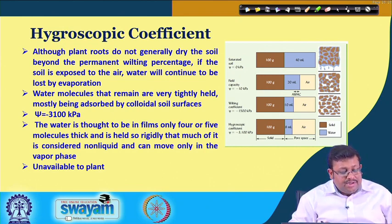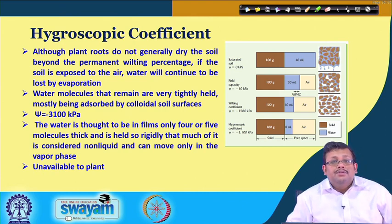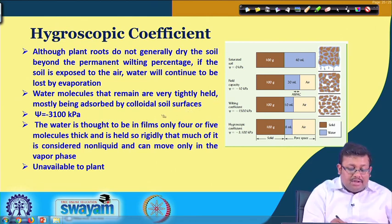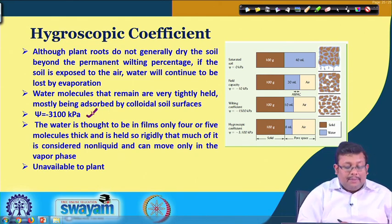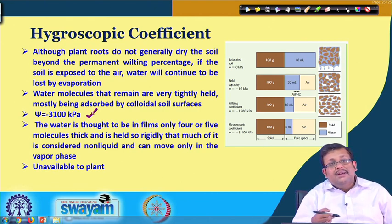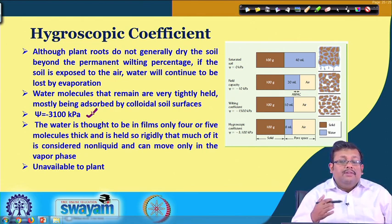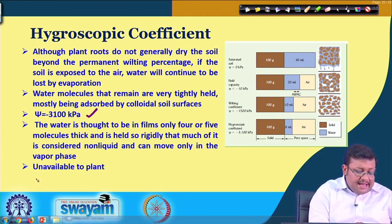Hygroscopic coefficient: plant roots do not generally dry the soil beyond the permanent wilting percentage. If the soil is exposed to air, water continues to be lost by evaporation, and remaining water molecules are very tightly held — mostly adsorbed by the colloidal soil surface. At the hygroscopic coefficient, the water potential is −3100 kPa. The water films are thought to be only 4–5 molecules thick, held so tightly that much of it is considered non-liquid and can move only in the vapor phase — it is essentially unavailable to the plant.